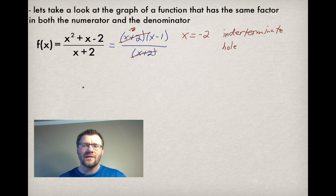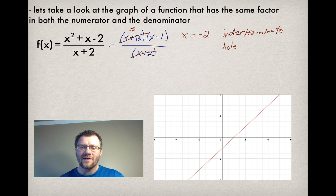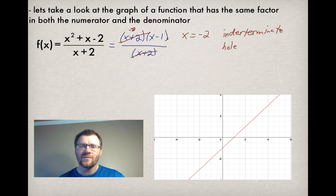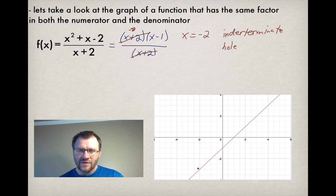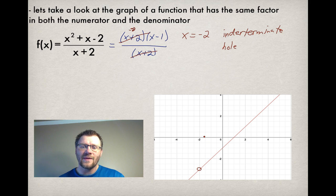What that looks like on the graph: we've got our x-intercept at x equals positive 1, which we could find from the equation. And there should be a hole at x equals negative 2. On your graph, you draw the line and put a little open circle at that location of x equals negative 2.